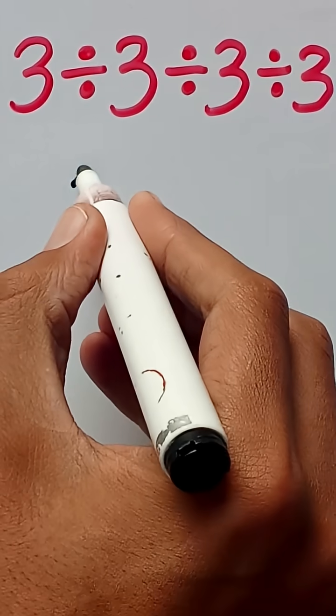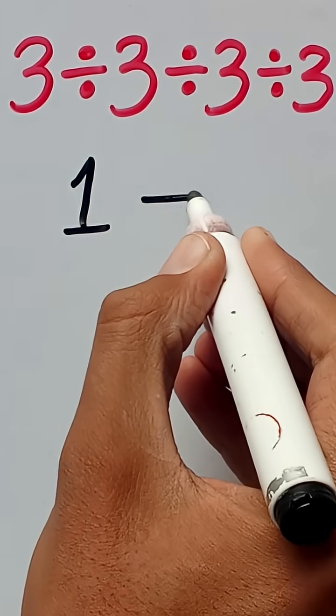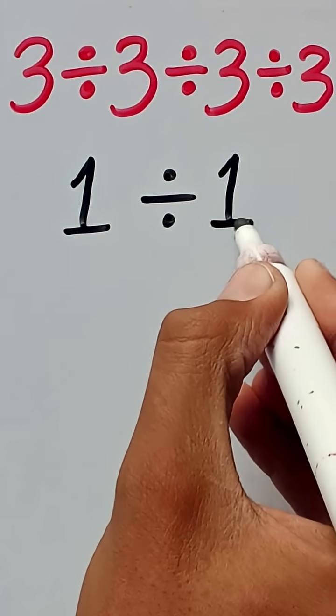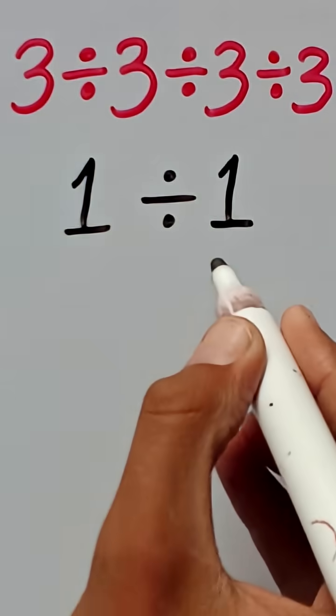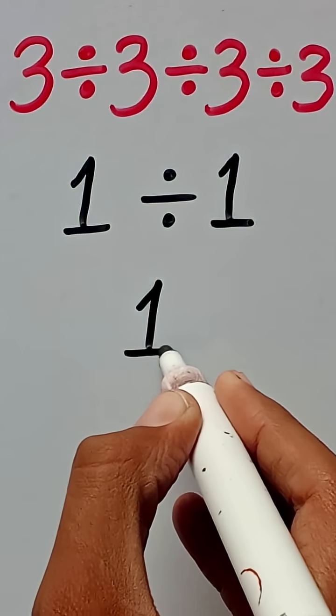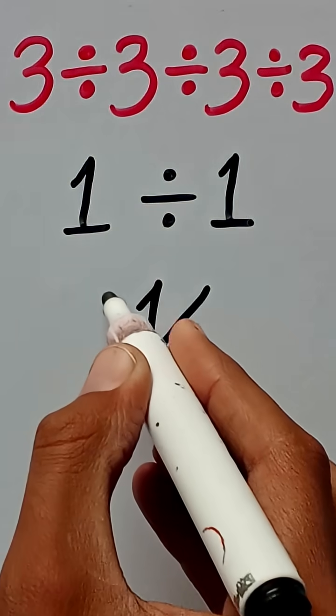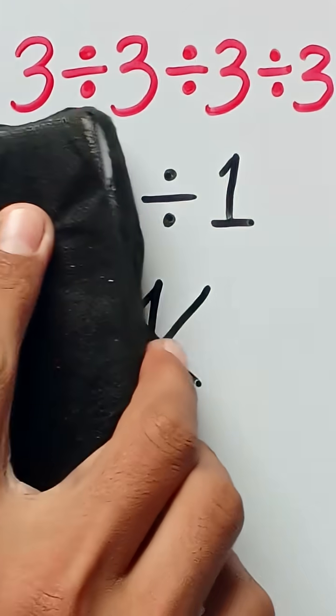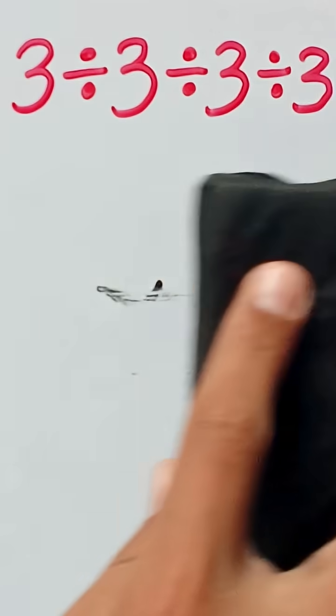3 divided by 3 equals 1, divided by 3, divided by 3 again equals 1, 1 divided by 1 equals 1. But this answer is wrong because of the order of operations, which is called the PEMDAS rule, which says that whenever